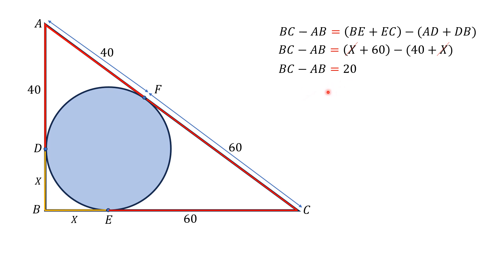Squaring both sides of this equation, the left side will become BC² plus AB² minus 2BC times AB, and the right side will become 400.